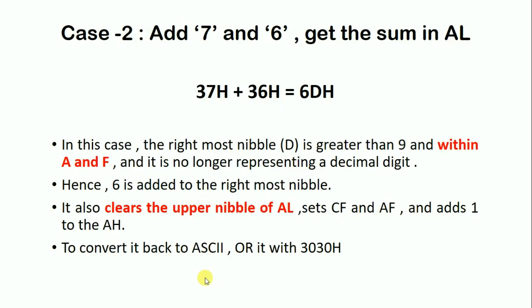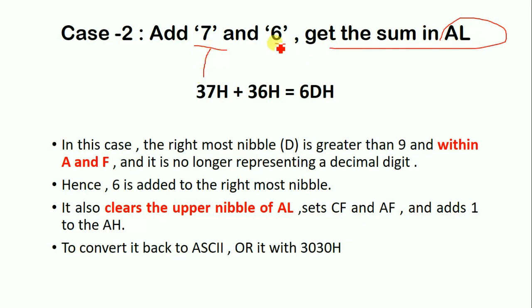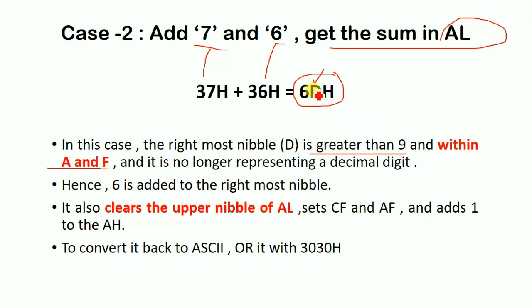Now for example 2: we add ASCII values 7 and 6 to get the sum in AL. Converting to hexadecimal: 7 becomes 37H and 6 becomes 36H. Adding gives 6DH. Checking the lower nibble of AL: the lower nibble 'D' is greater than 9 and is within the range of A to F, so it no longer represents a valid decimal digit.